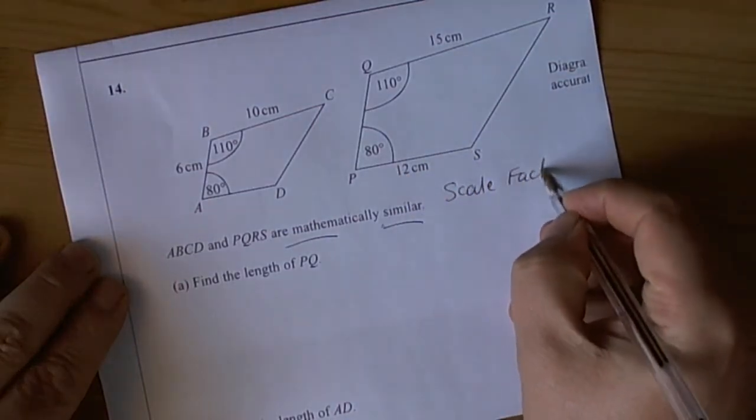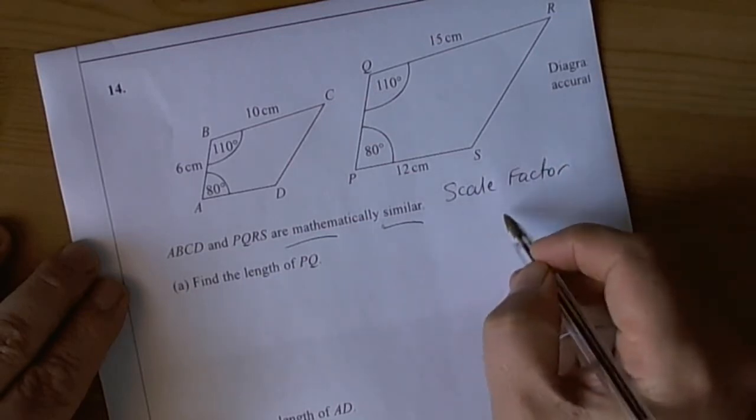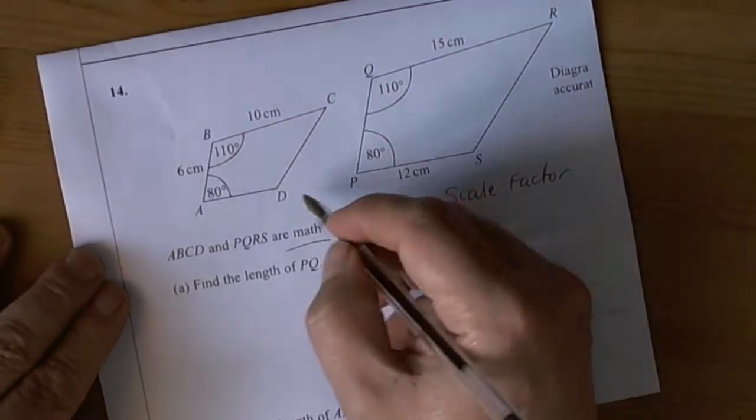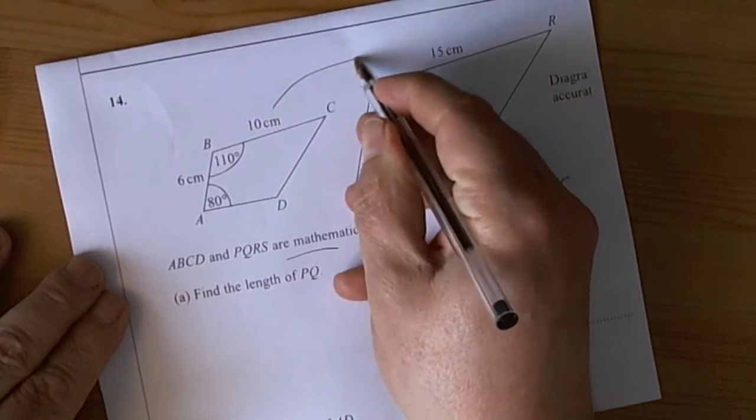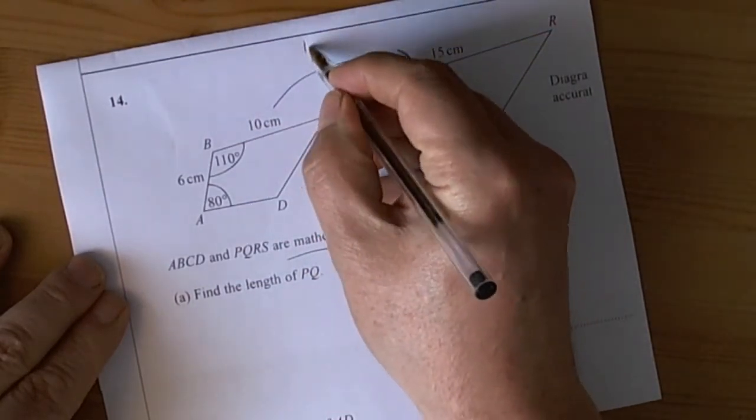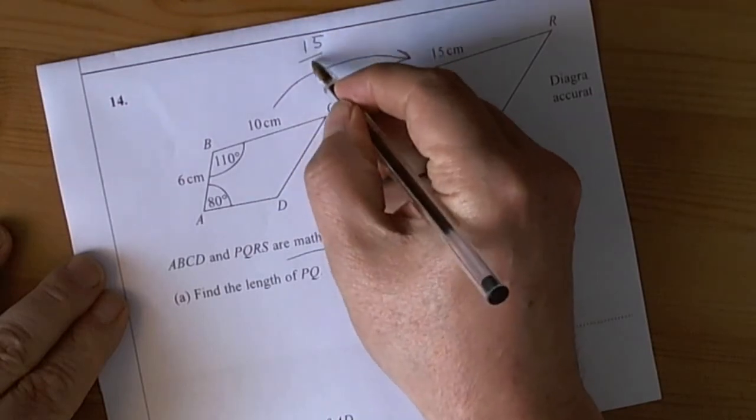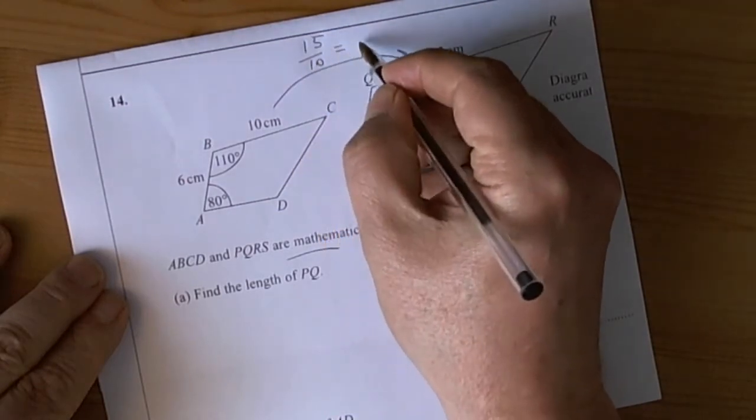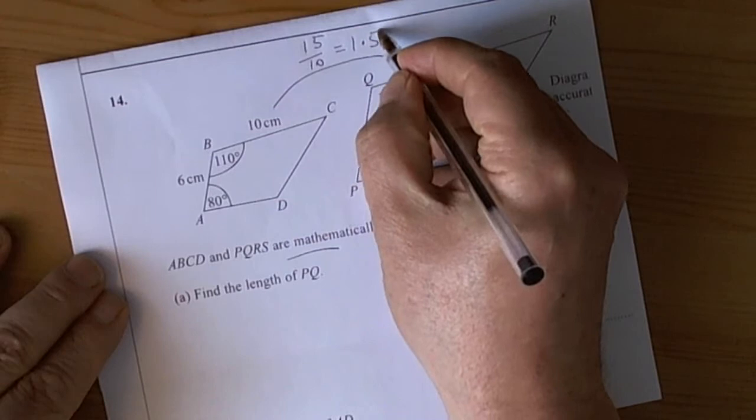Once we've found the scale factor, we can find any of the missing sides that we need. Personally, I always find the scale factor going from the small shape to the large shape. The new measurement for that side was 15, the old measurement was 10, so when we divide those we calculate the scale factor as being 1.5.